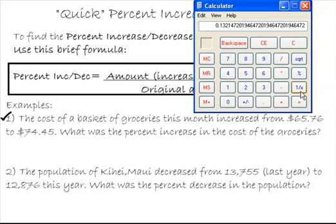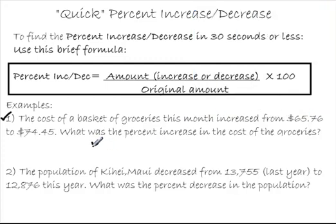okay, we get that decimal there, and that decimal we want to convert to a percent. And what we're simply going to do is multiply by 100. So we're going to multiply by 100, and we get 13.214. So approximately, that would be 13.2%.